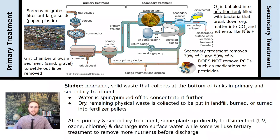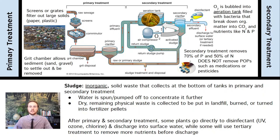After primary and secondary treatment, some plants do not go through tertiary treatment at all — they don't take extra steps to remove nutrients and prevent nutrient pollution. It goes straight to disinfection. Disinfectants include UV light, chlorine, and ozone, which kill leftover bacteria from the aeration tanks of secondary treatment, as well as E. coli or other bacteria that exist in the human waste that ends up in these plants.